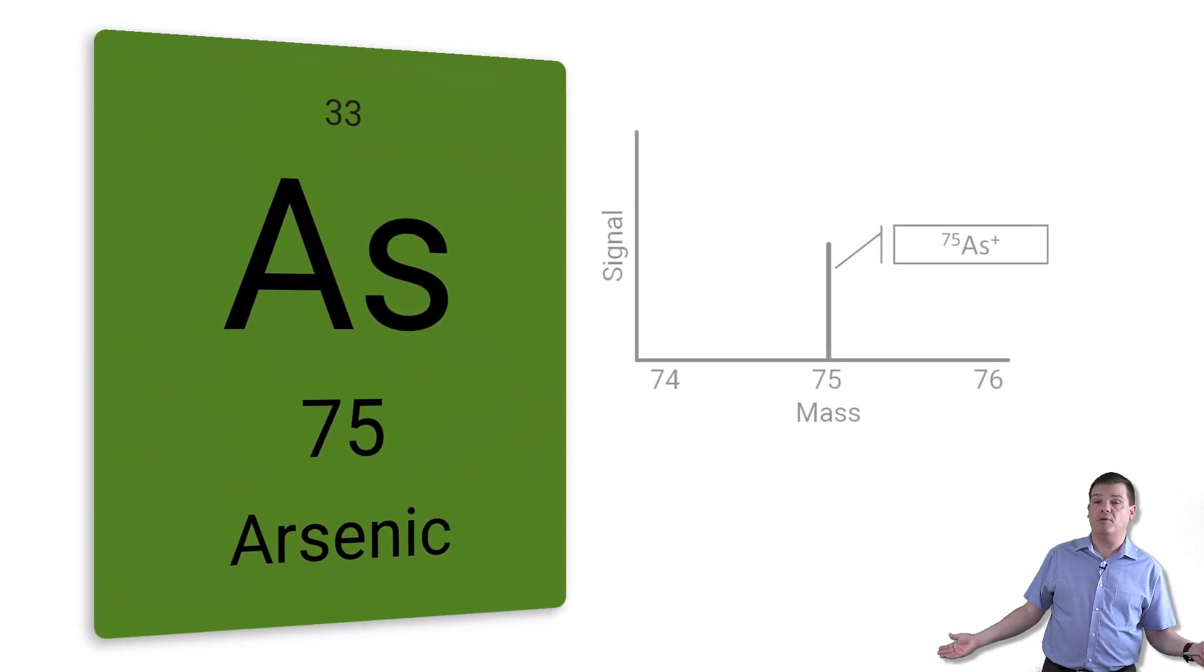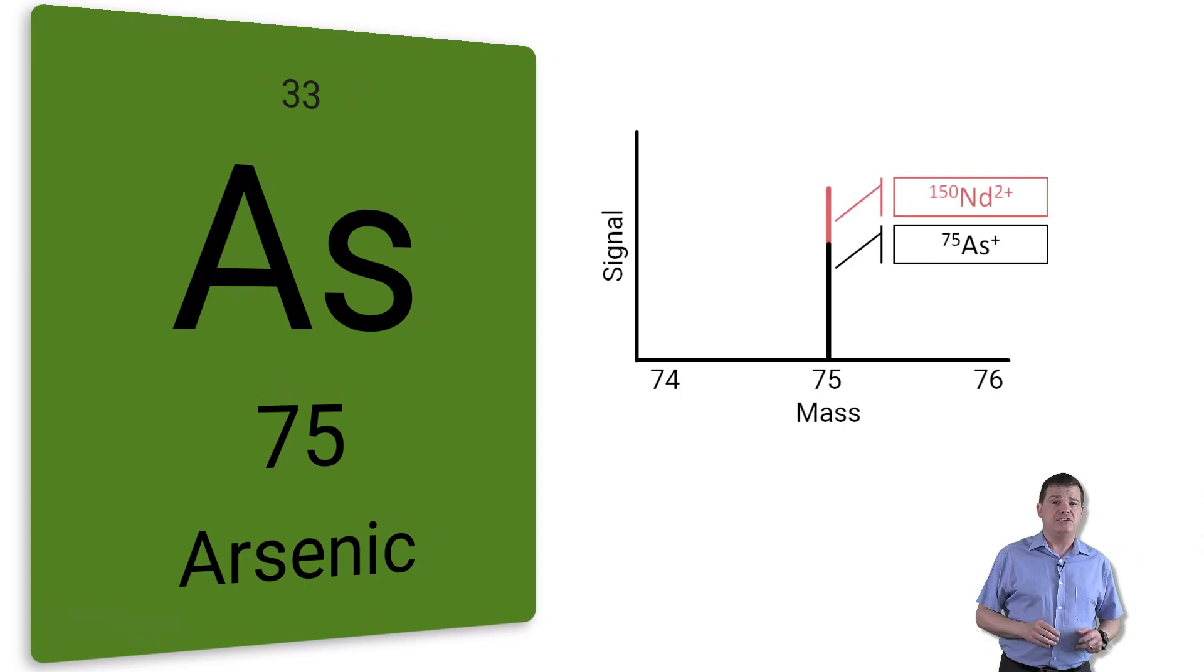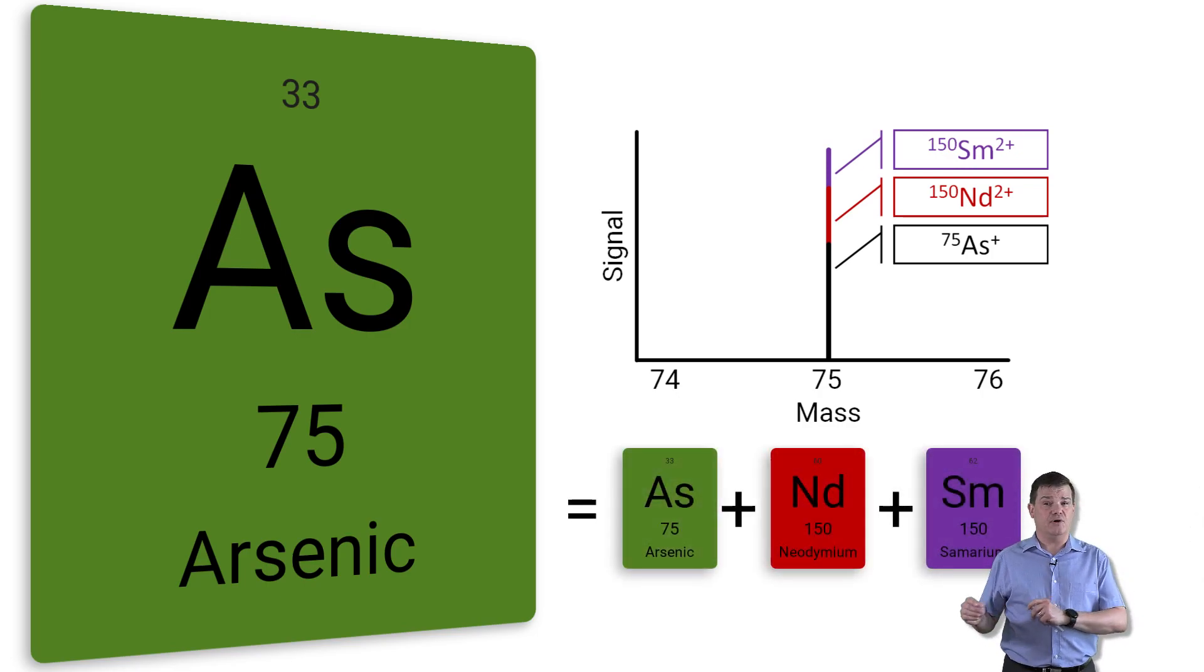This is a problem because the signal from the doubly charged neodymium and samarium will contribute to the signal we measure for arsenic at mass 75, giving us an overestimation of the arsenic concentration. So let's take a look at how we can rid ourselves of these pesky doubly charged interferences.